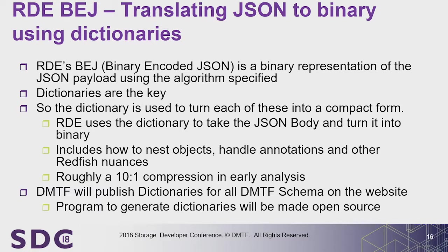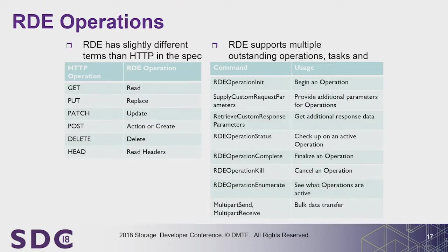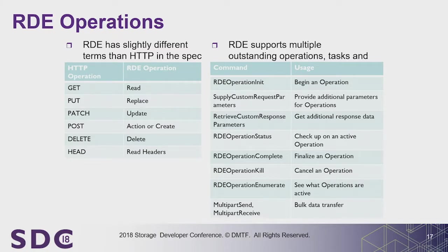For operations, we created RDE operations that mirror all HTTP operations, but with different names — because of how multiple outstanding operations, tasks for long-running operations, and segmentation/reassembly are handled. There's a state machine in the spec: a transmitted message gets a response; if short, the whole response comes back immediately; if long, there's a chunked retrieval process. It had to work in both directions. For those actually implementing this, dive into the spec.